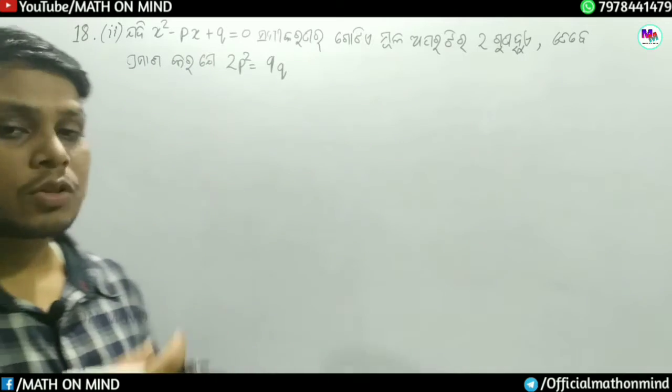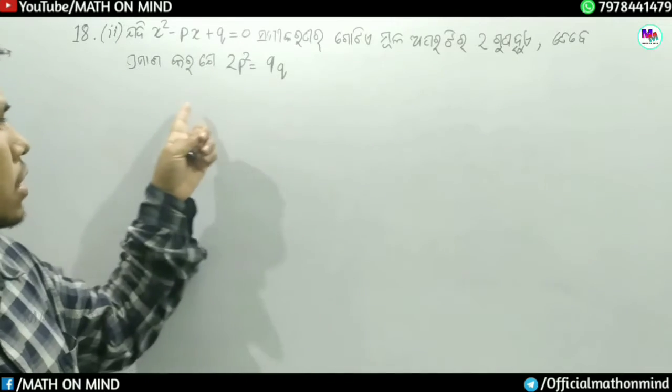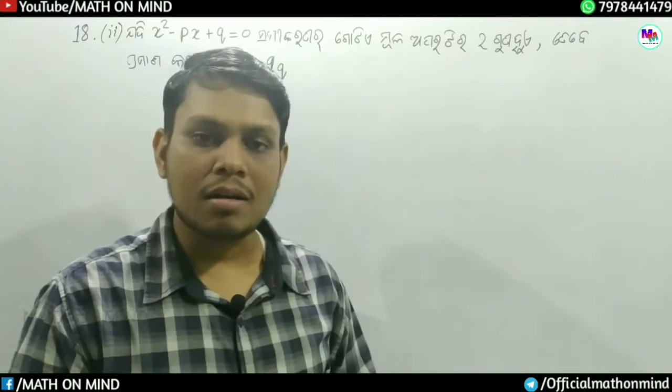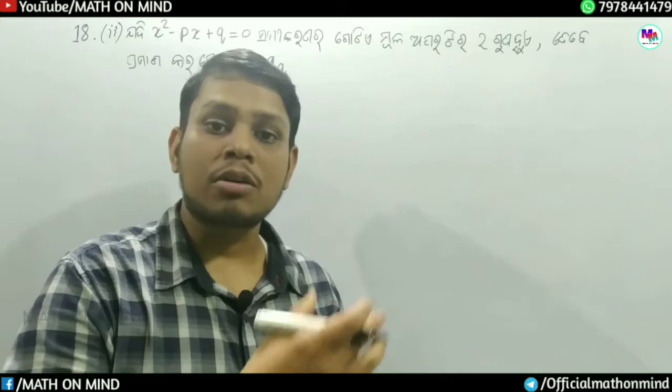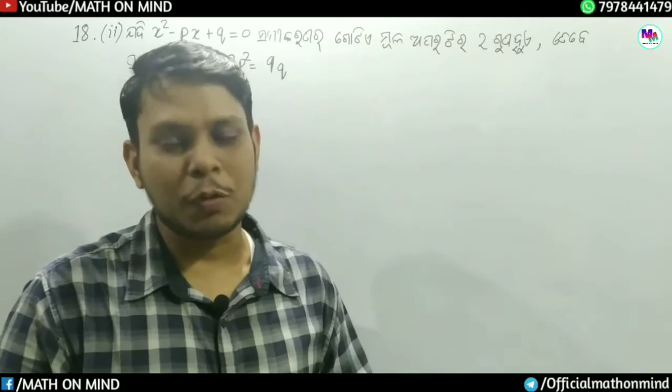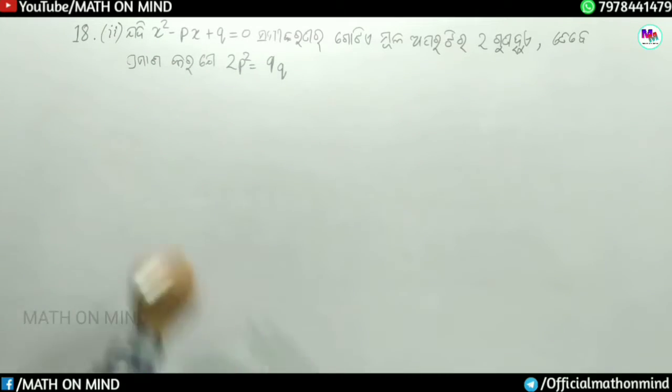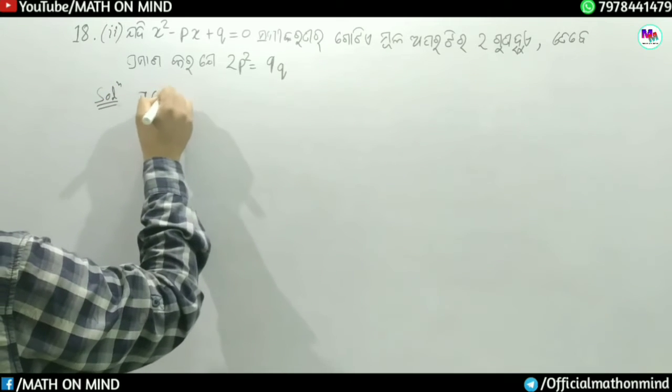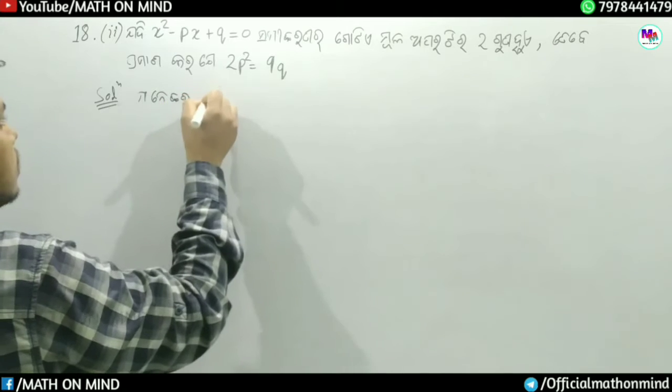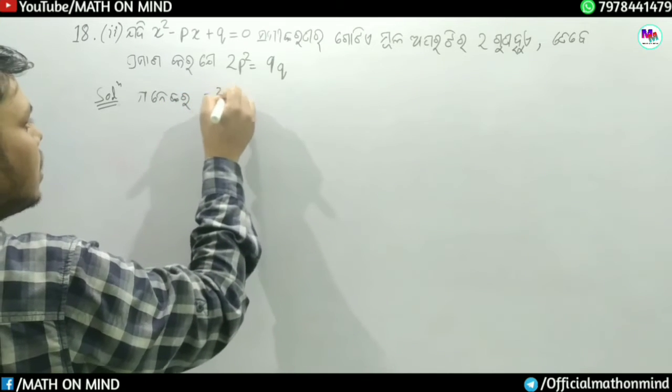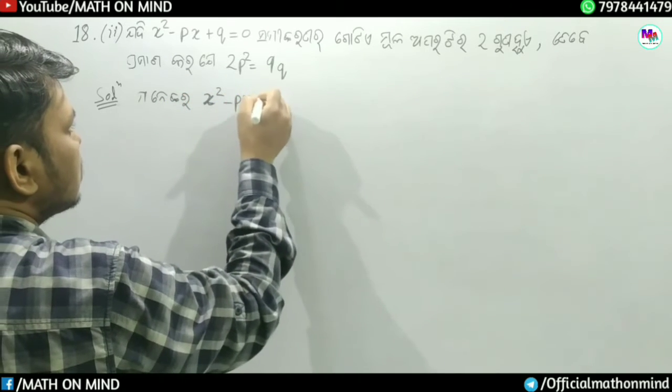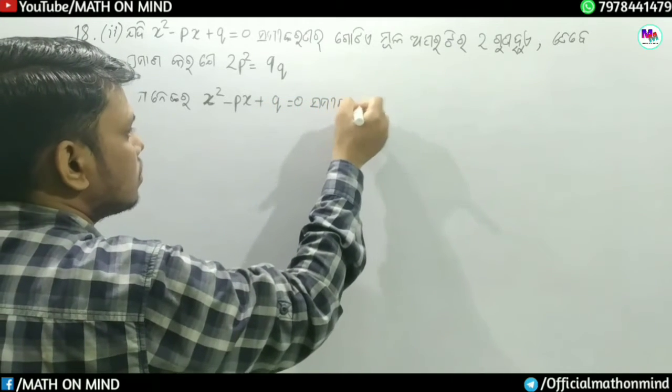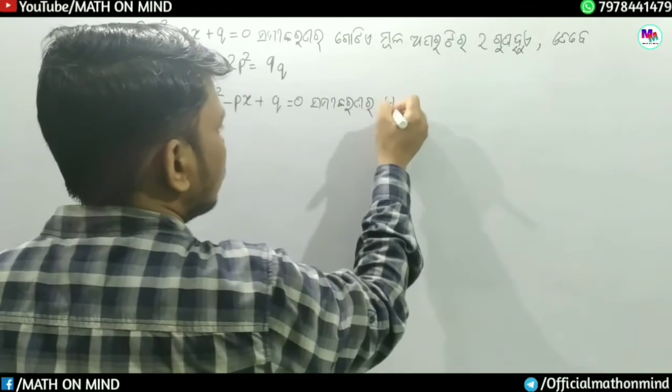The next challenge: if the equation is x square minus px plus q equal to 0, and one root is 2 times the other, prove that 2p square is equal to 9q.